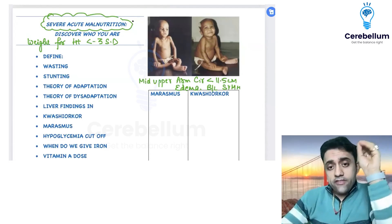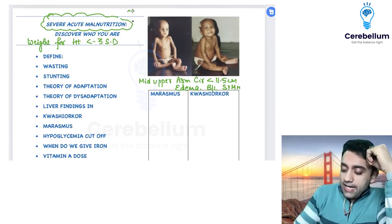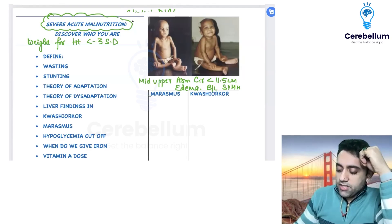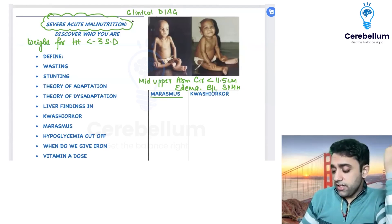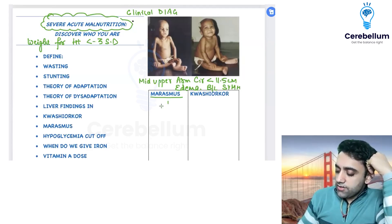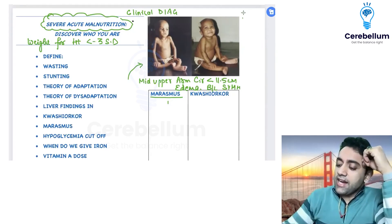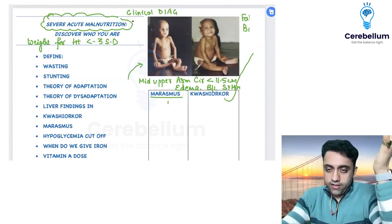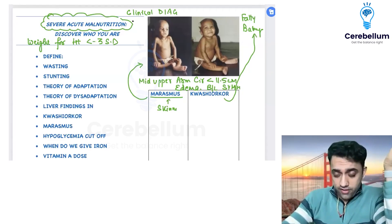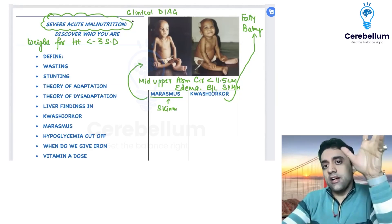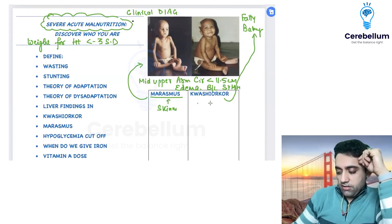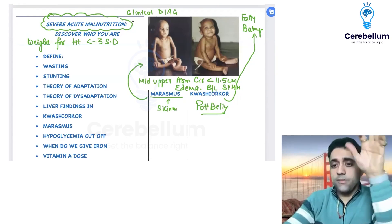SAM is a clinical diagnosis. Remember: 'sukha bacha' (skinny child) is Marasmus — 'S' for skinny, 'S' for Marasmus. The fatty baby is the Kwashiorkor baby. In an MCQ, if a child has a pot belly, the answer is Kwashiorkor.